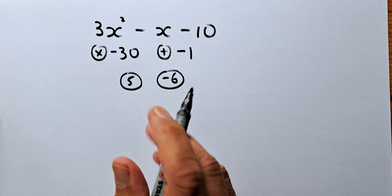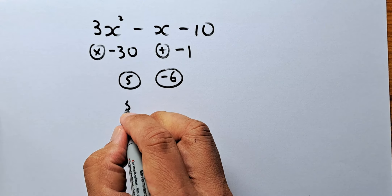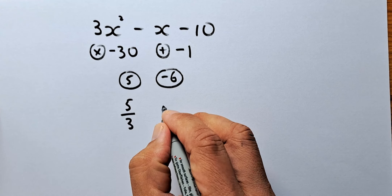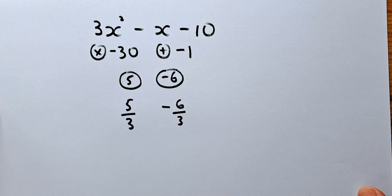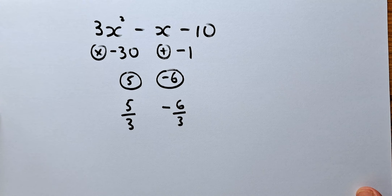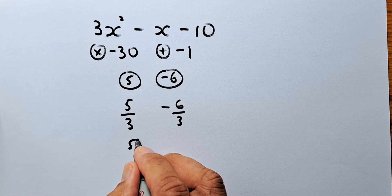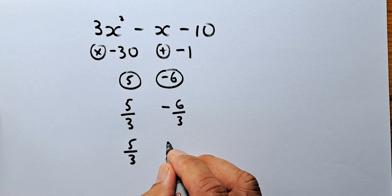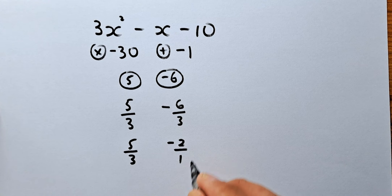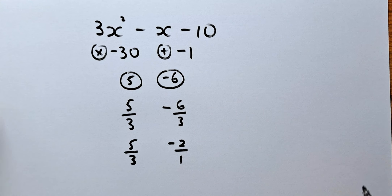We have found the two factors to be 5 and minus 6, because 5 times minus 6 is minus 30, and 5 plus minus 6 is going to be minus 1. Next step, we're going to divide these two numbers by 3, so they're going to be 5 over 3 and minus 6 over 3. Now we are going to simplify the fraction: 5 over 3, and the next one is going to be minus 2 over 1, because 6 divided by 3 is minus 2 and 3 divided by 3 is 1.